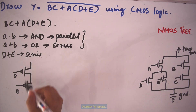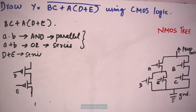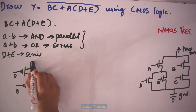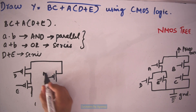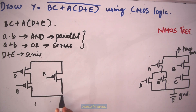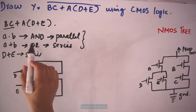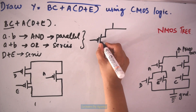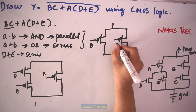Now we have D plus E implemented. Next we have to implement A dot (D plus E). Dot means AND, so in PMOS it will be in parallel. So A will be in parallel with the D plus E series combination. Next is BC — BC means AND operation, so it will also be a parallel connection with B and C in parallel.